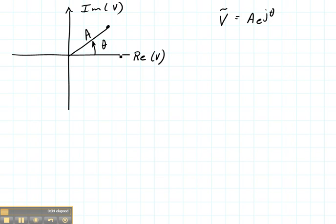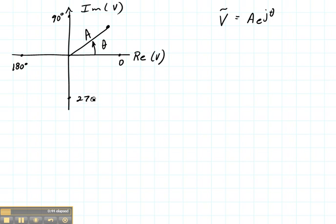So theta equals zero is right here, theta equals 90 degrees is up top, theta equals 180 degrees is to the left, and theta equals 270 degrees is to the bottom.